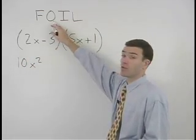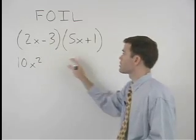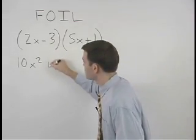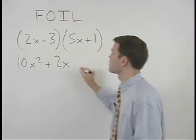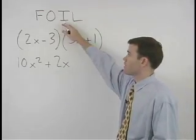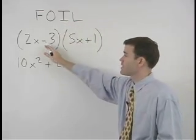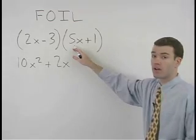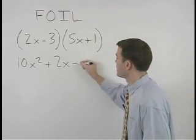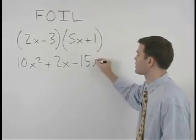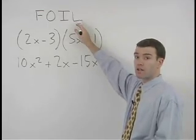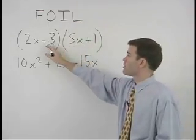product of the outer terms, which is 2x times positive 1, or positive 2x, plus the product of the inner terms, which is negative 3 times 5x, or negative 15x, plus the product of the last terms, negative 3 times